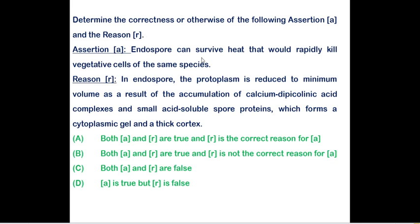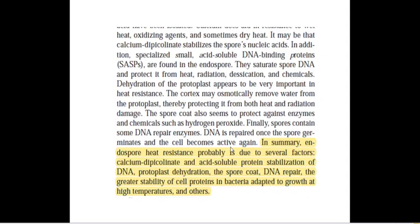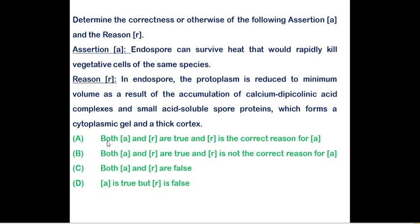Determine the correctness of the following assertion and reason. Assertion: endospores can survive heat that would rapidly kill vegetative cells of the same species — this is absolutely correct. Reason: the protoplasm is reduced to a minimum volume due to accumulation of calcium dipicolinic acid complex and small acid-soluble proteins, which form a cytoplasmic gel within the thick cortex. Both A and R are true, and R is the correct reason for A.